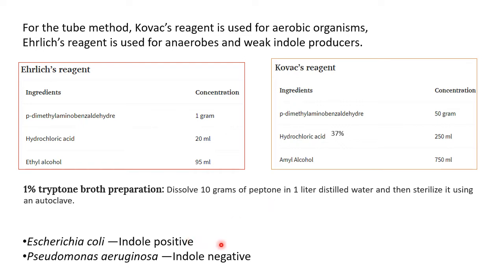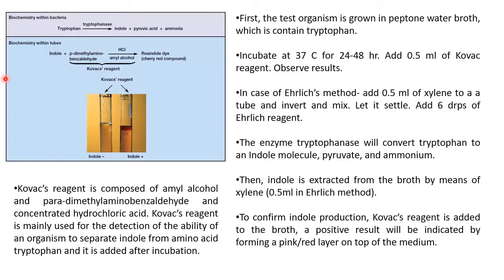If you get a question in a viva to name an indole positive and indole negative organism: Escherichia coli is indole positive, and Pseudomonas aeruginosa or Klebsiella gives an indole negative result. Now let's study the reaction. Tryptophan is converted by the tryptophanase enzyme into indole, pyruvic acid, and ammonia. In the tube, indole reacts with the Kovacs reagent — P-dimethylaminobenzaldehyde plus amyl alcohol and HCl — to give a cherry red compound called rose indole dye, which is reported as a positive reaction.